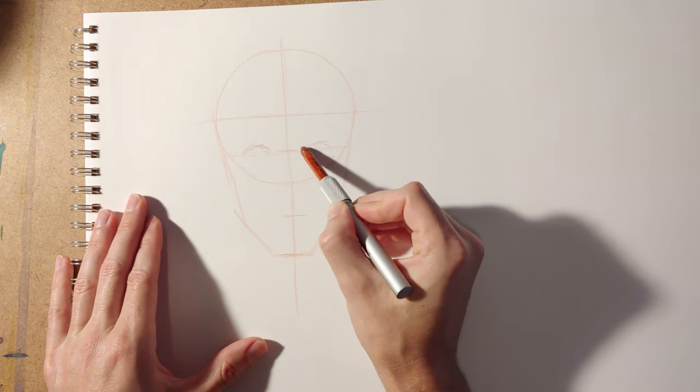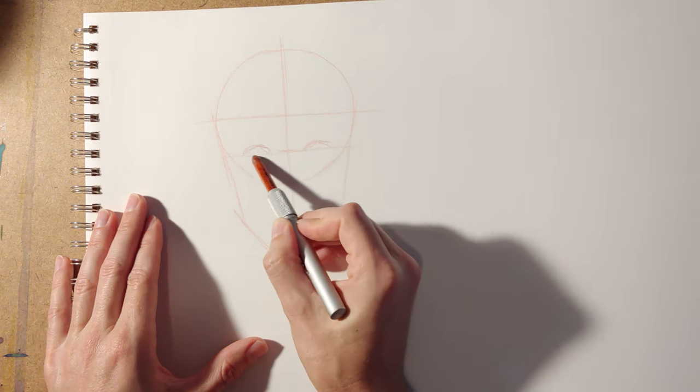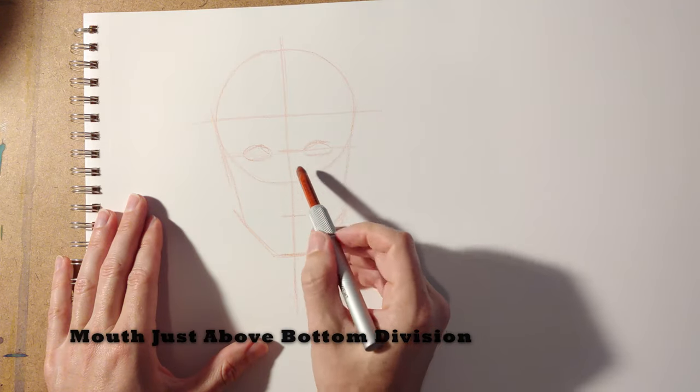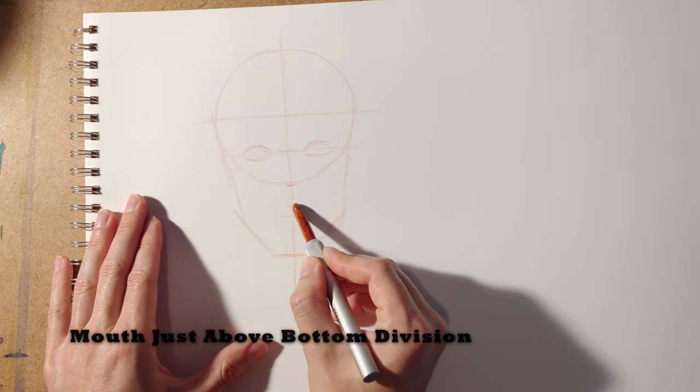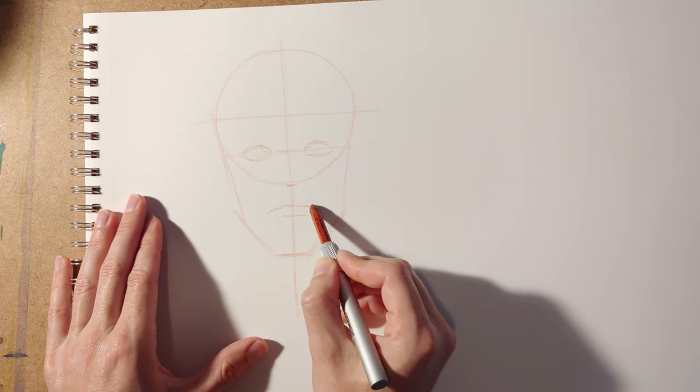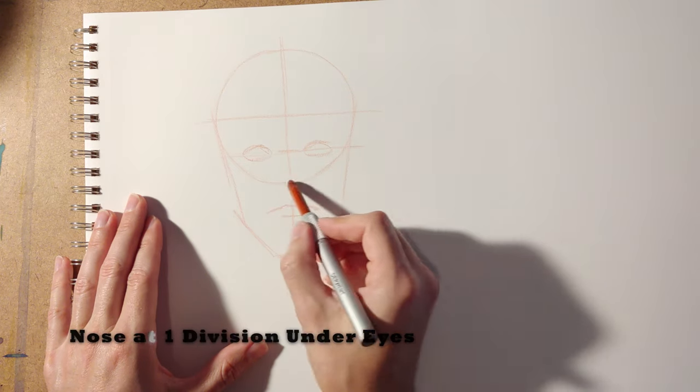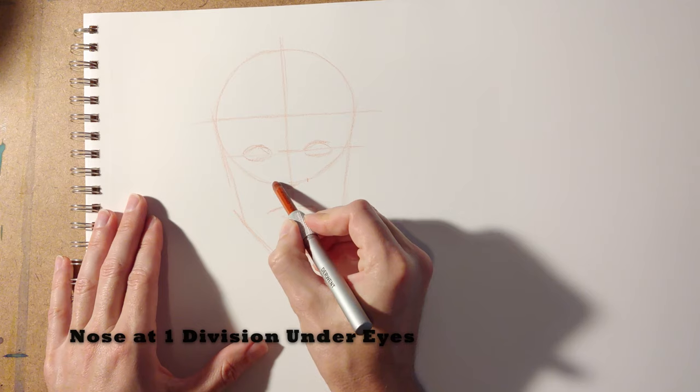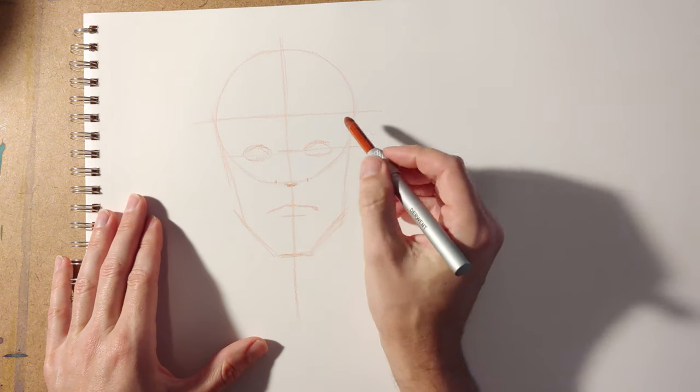The eyes go right in the middle there on that eye line, and you'll try to center them. The nose goes just below that, and the mouth actually goes, the center of it goes above that bottom division line, and the nose goes in between the two.